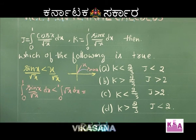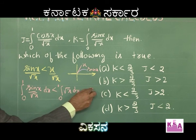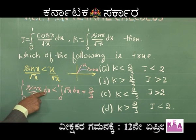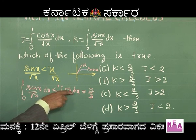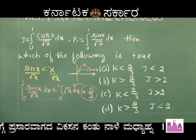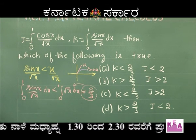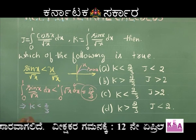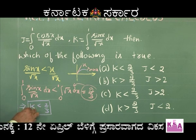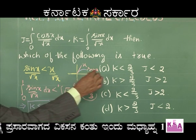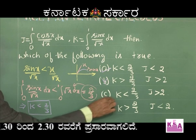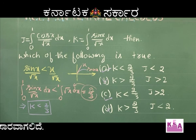The integral of √x from 0 to 1 is x^(3/2) · (2/3) evaluated from 0 to 1, which equals 2/3. That means K = ∫₀¹ sin(x)/√x dx < 2/3. This immediately tells us that option A and option C are the only possibilities — option B and option D are eliminated.